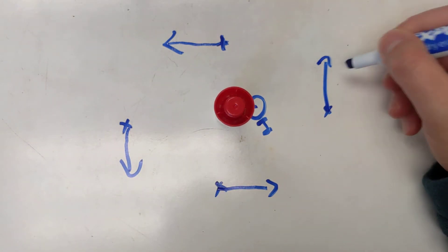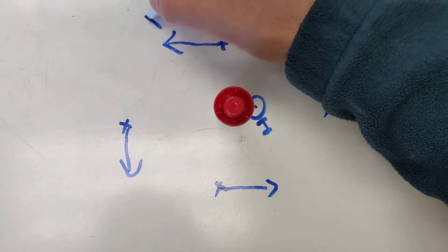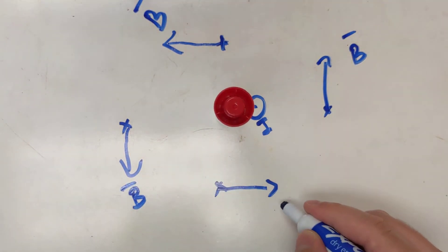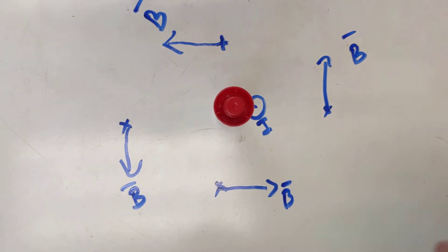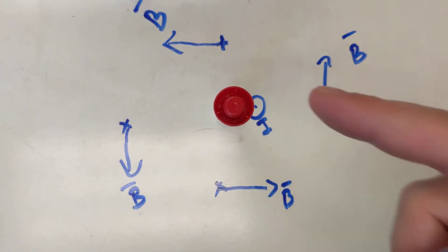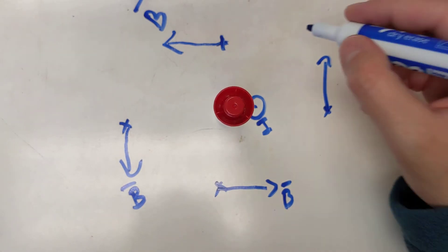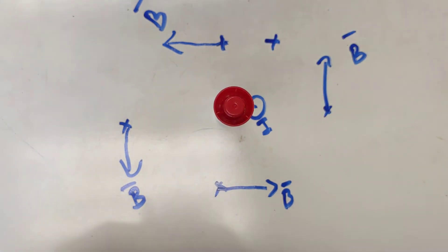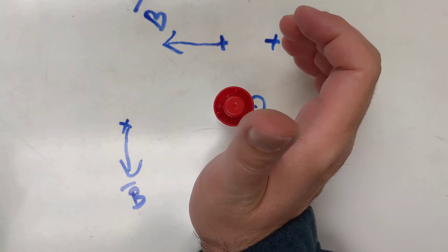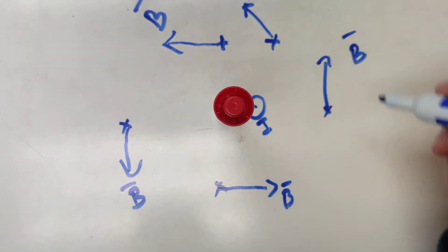These are the four directions of the magnetic field around the current that is flowing in the wire in this direction. If I want to find the direction of the magnetic field here, I would be doing something like this and the magnetic field here would point that way.